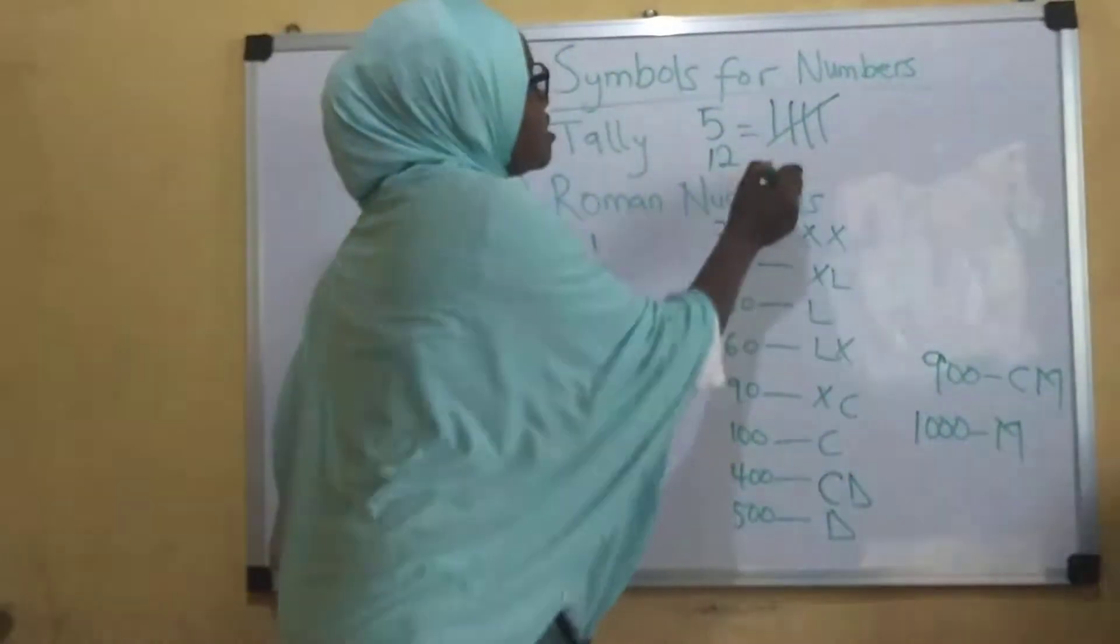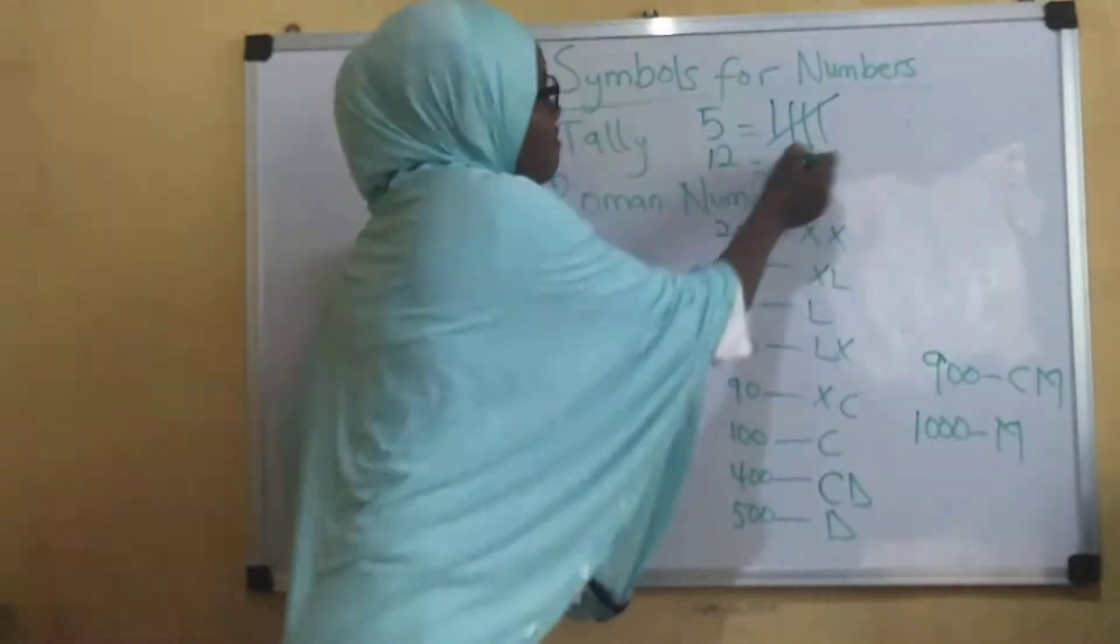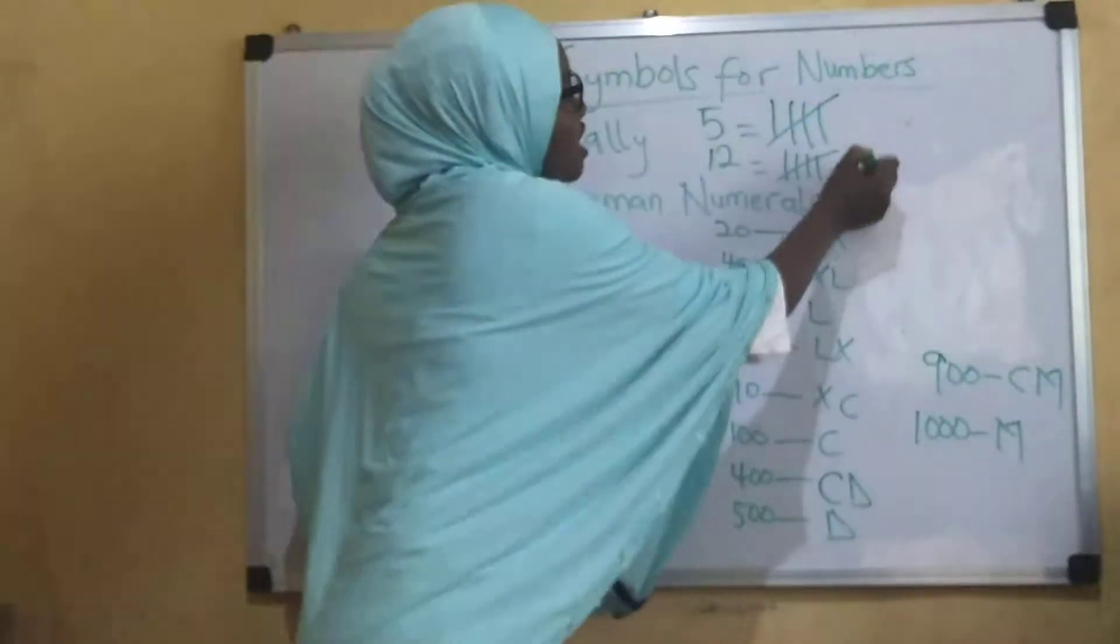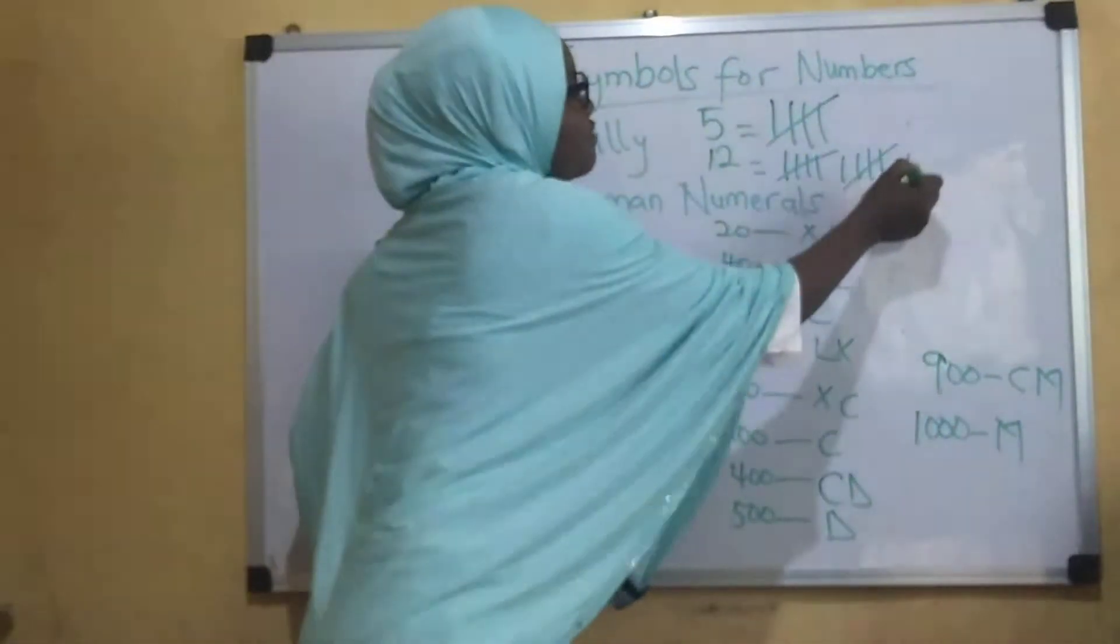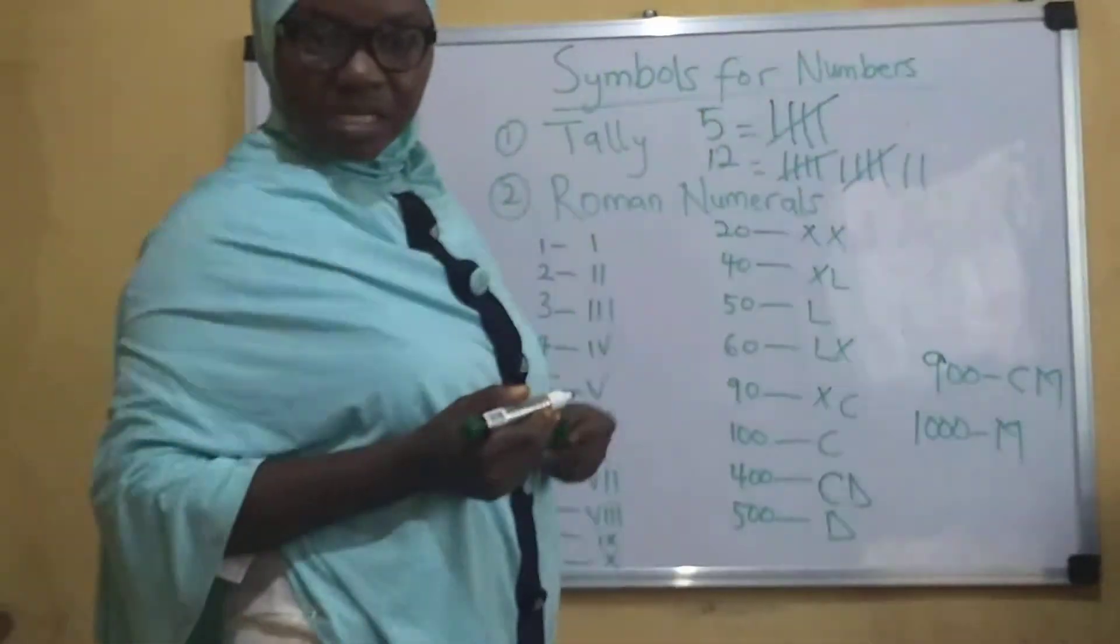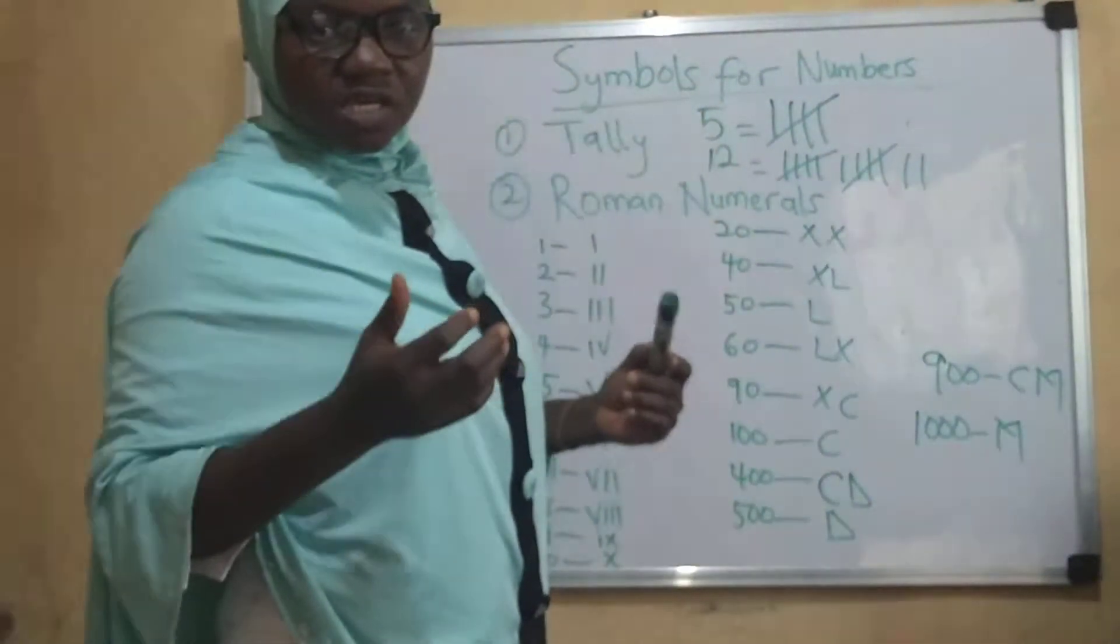If I have 12, this is what I'm going to do. 1, 2, 3, 4, 5, 6, 7, 8, 9, 10, 11, 12. Do you understand? So it is just easy peasy. It is very, very easy.